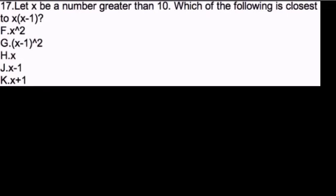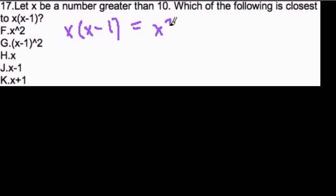The first thing I'm going to do is simplify x times x minus 1. Using the distributive property, that becomes x squared minus x — x times x is x squared, and x times negative 1 is minus x.